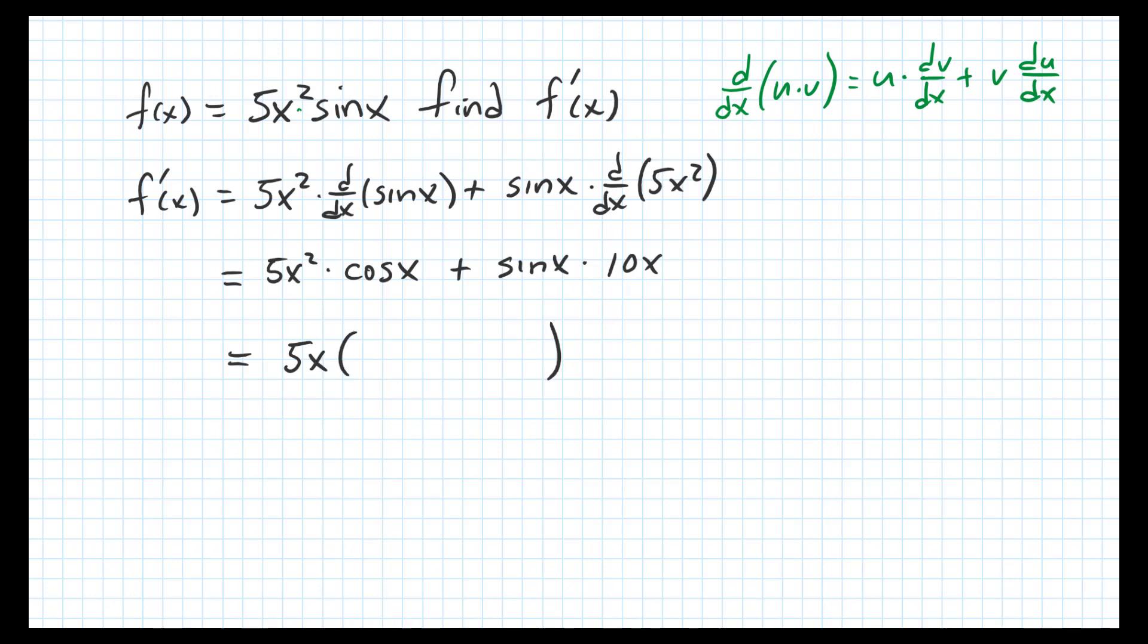What will be left is x·cos(x) + 2·sin(x), and that will be our derivative in its simplest form: 5x(x·cos(x) + 2·sin(x)).